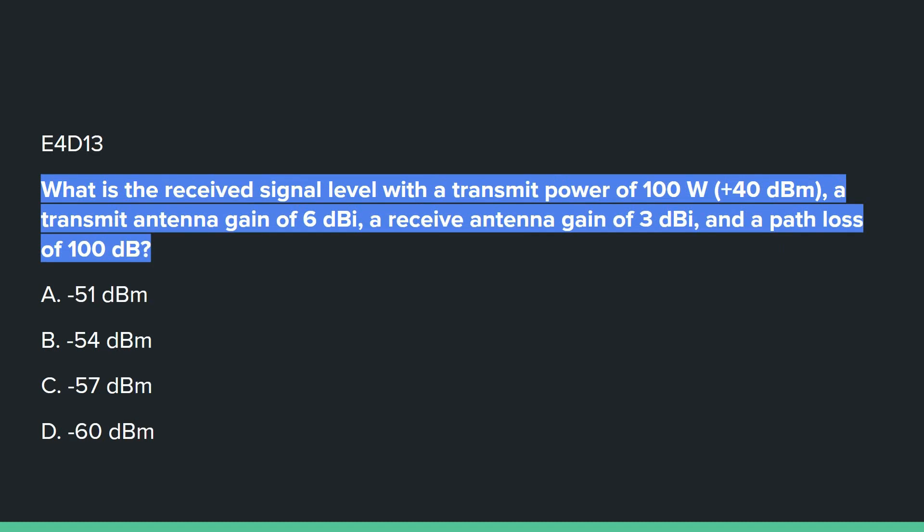E4D13: What is the received signal level with a transmitter power of 100 watts, a transmit antenna gain of 6 dBi, a received antenna gain of 3 dBi, and a path loss of 100 dB? Answer A: negative 51 dBm.